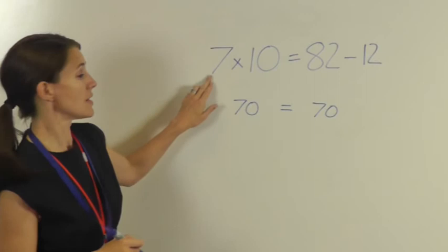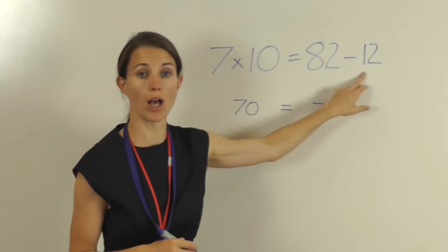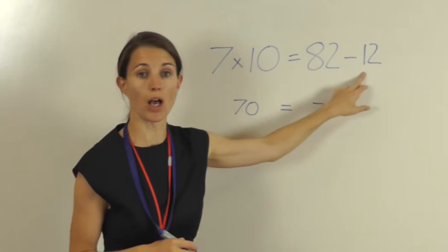So let's check: 7 times 10 is 70, 82 take away 12 is 70, and that means that both sides are equal. So my missing number was 12.